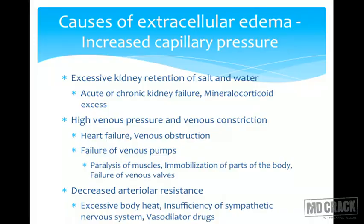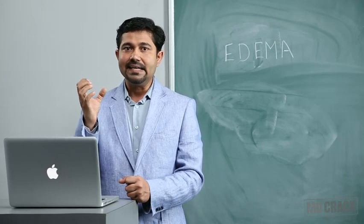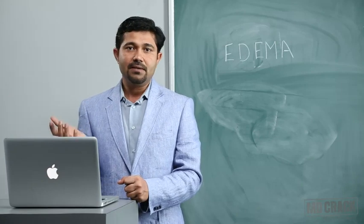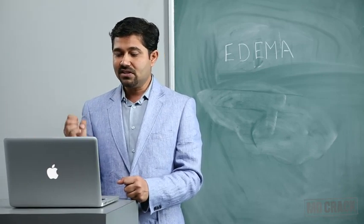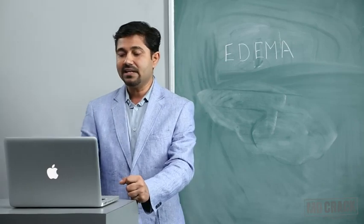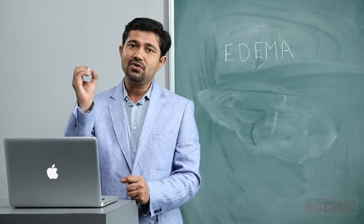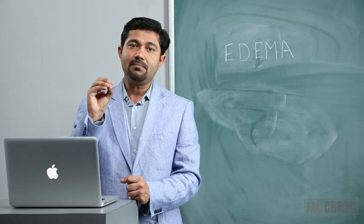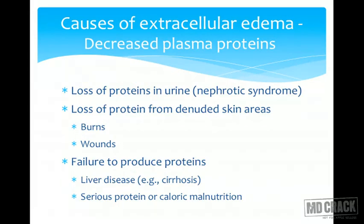Decreased arterial resistance: if arterioles dilate, blood flow increases, raising hydrostatic pressure at the arterial end of the capillary, causing more filtration and edema. Conditions causing arteriolar dilation include excessive body heat, insufficiency of the sympathetic nervous system (which normally maintains vasoconstriction), and vasodilator drugs. If sympathetic tone is decreased, arteries dilate, blood supply increases, and edema results.